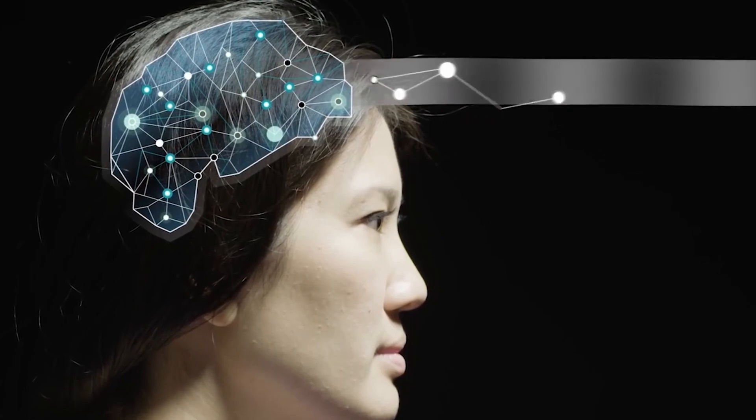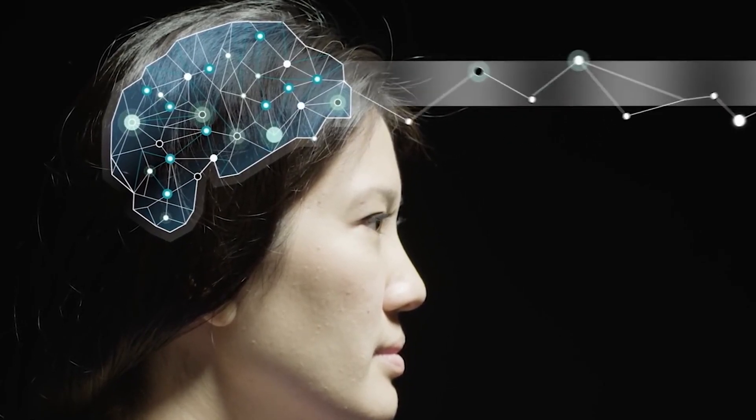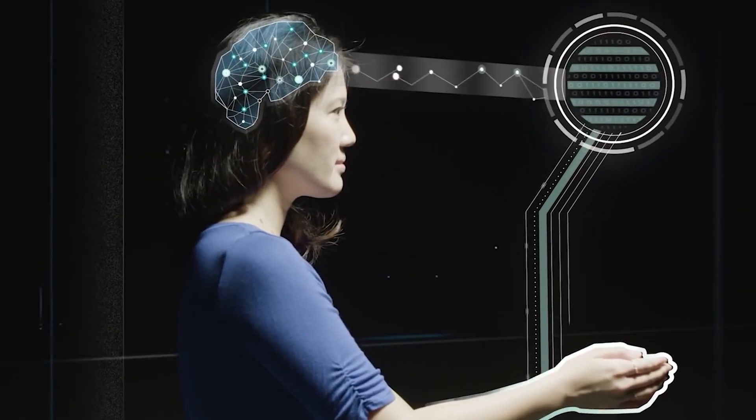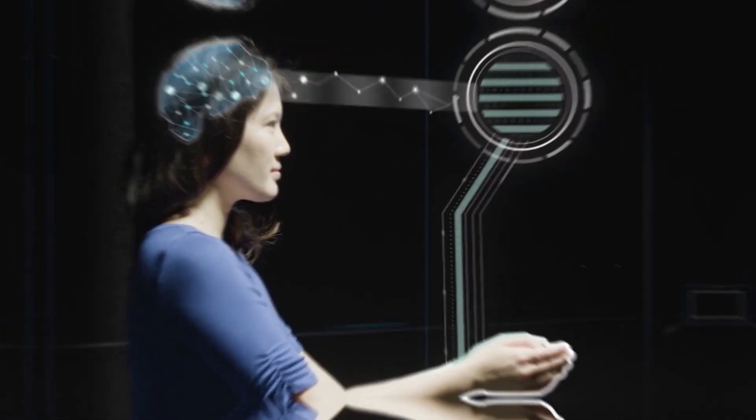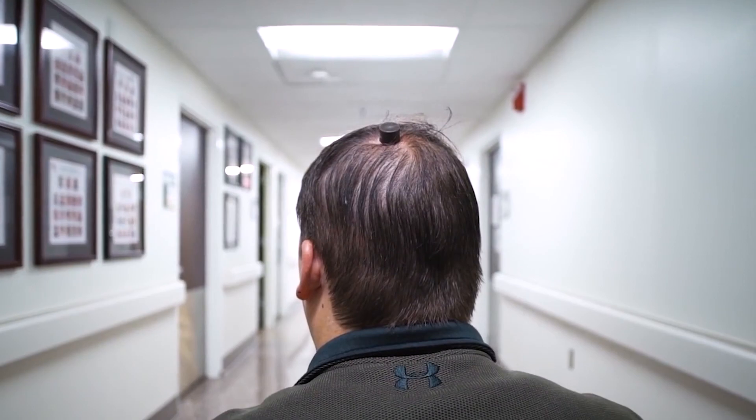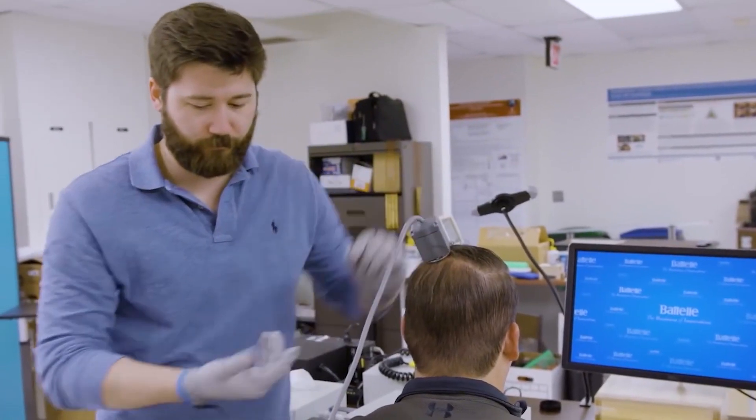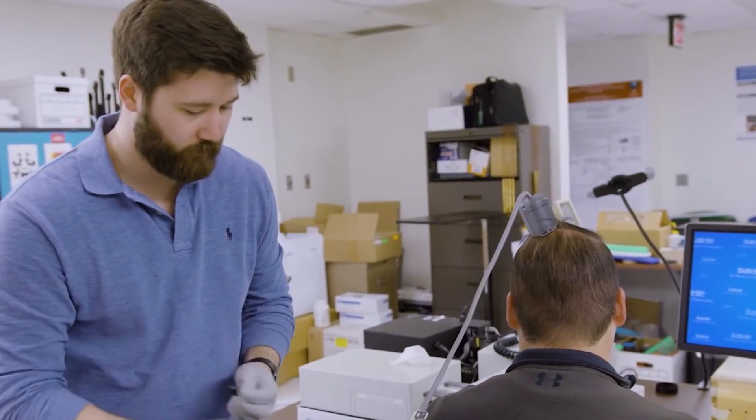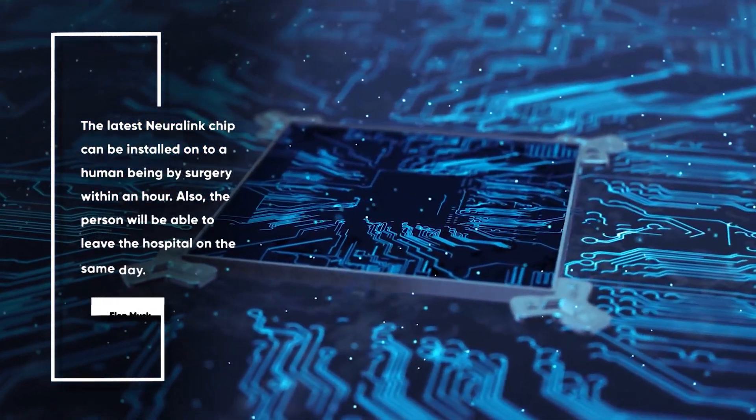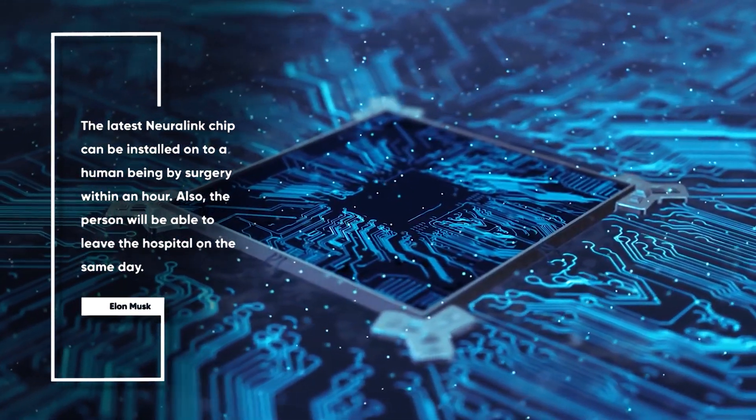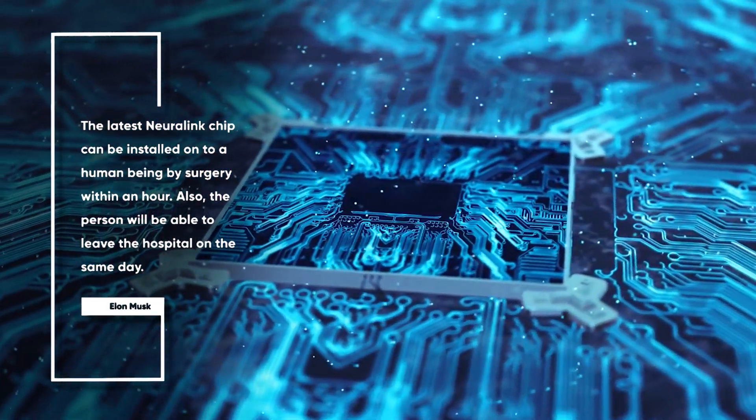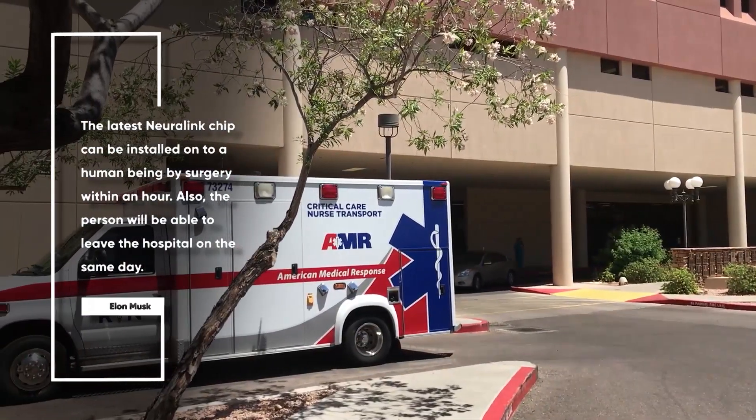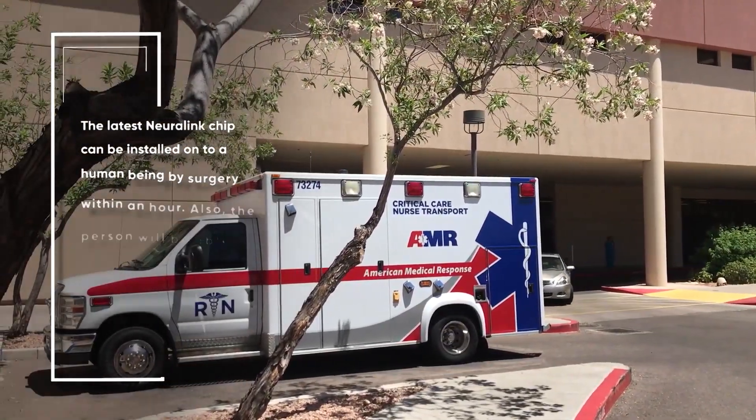Now one of the most critical things in the success of Neuralink is going to be how easy or difficult it is to actually get this chip into a brain. If it involves a very complicated invasive surgery, then obviously people won't really be inclined towards it. But according to Elon Musk, the latest Neuralink chip, which is known as Link V 0.9, can be installed onto a human being by surgery within an hour. Also, the person will be able to leave the hospital on the same day.